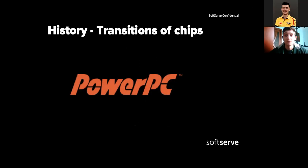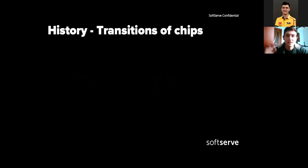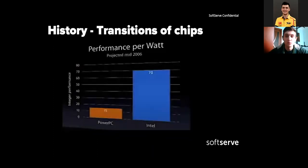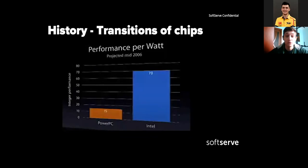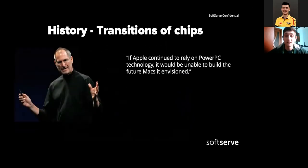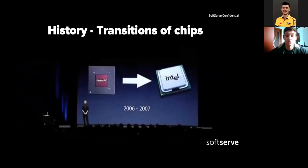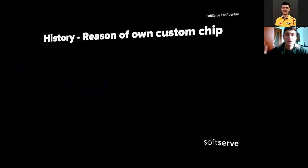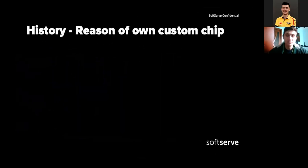Apple used PowerPC chips in Macs up until 2005, but by that time the PowerPC collaboration with IBM and Motorola wasn't going well. Their chips were falling behind Intel's, which used a CISC architecture. Intel-based processors outperformed PowerPC processors in terms of energy consumption by almost five times. At WWDC 2005, Steve Jobs stated that if Apple continued to rely on PowerPC, it would be unable to build the future Macs it envisioned — and the transition to Intel began, taking two years.